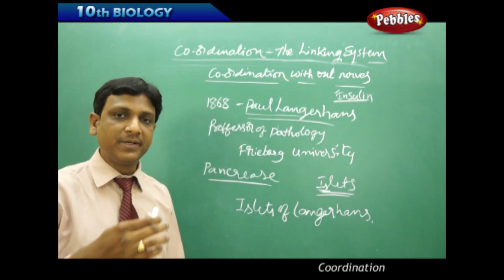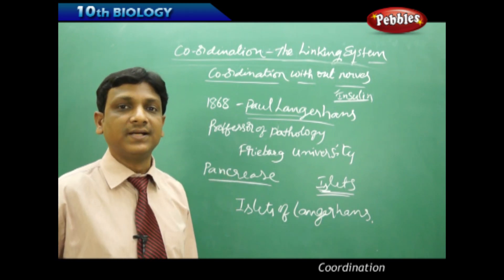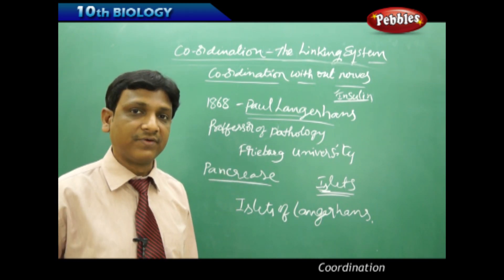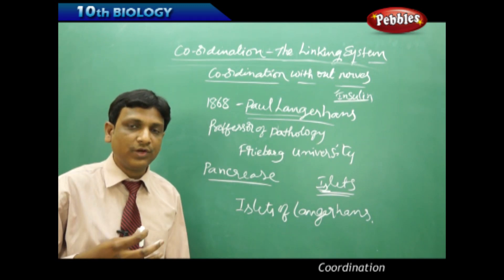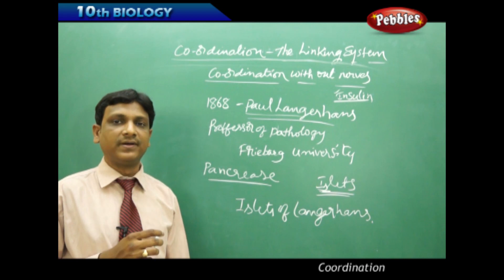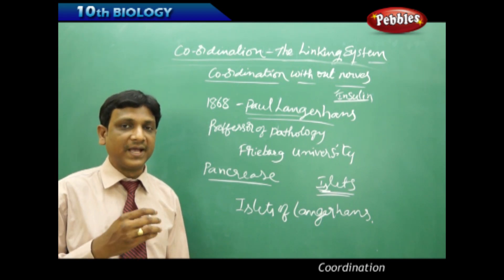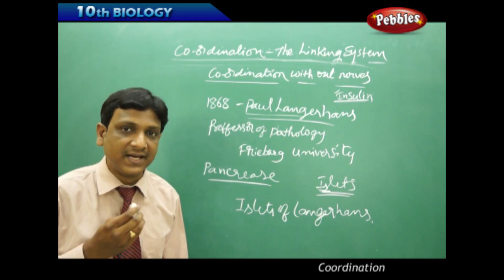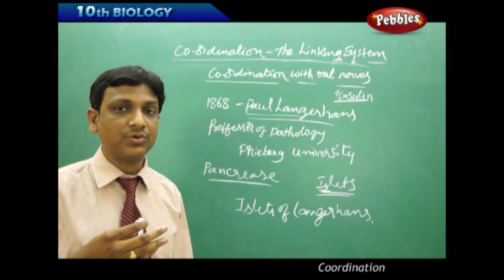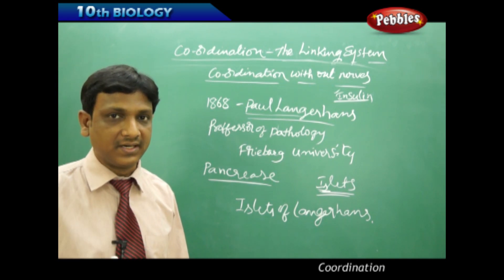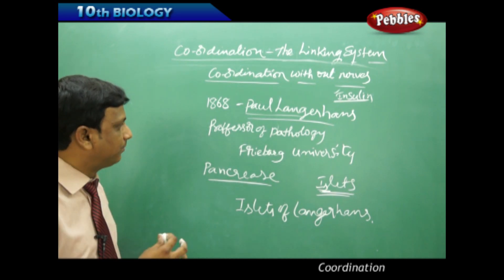Later, other researchers working on the same concept — identifying the function of these island-like cells — found that removal of the pancreas leads to diabetes, the sugar disease. They observed that if the pancreas is removed from an experimental animal, it leads to high amounts of glucose in the blood, which is then excreted in the urine.